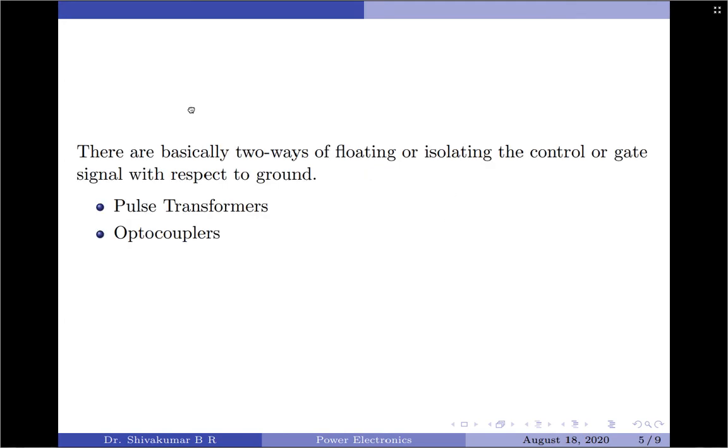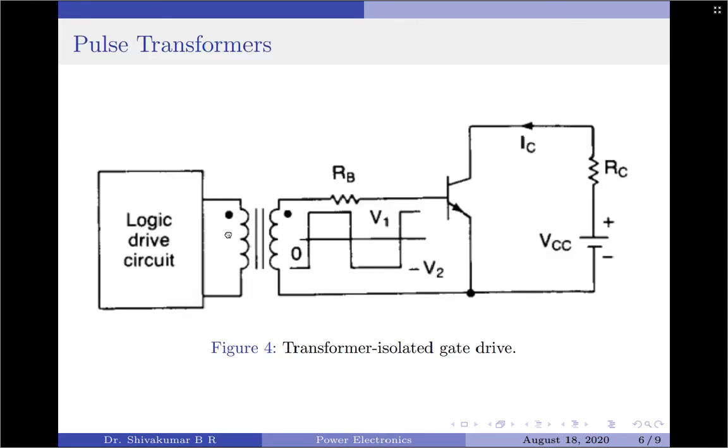Please note these are particularly applicable for G1 and G3. G2 and G4 can be directly gated because their source terminals are connected to the common ground. And we require separate gating signals for G1 and G3 because their source terminals are not connected to the common ground. And therefore, the logic generator should be used separately for G1 and G3. Now, coming to the commonly available techniques, we stated there are two basic ways of floating the control or gate signal with respect to ground. The first one is called as the pulse transformer and the second one is called as the optocoupler. Now, let us discuss each one of them individually.